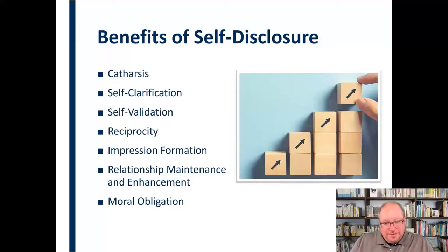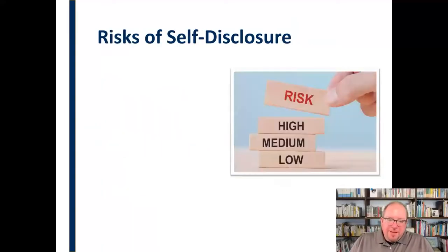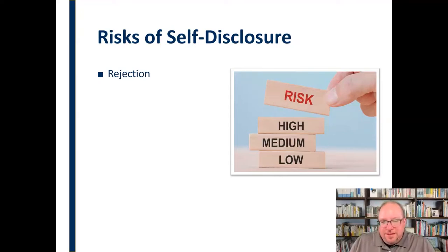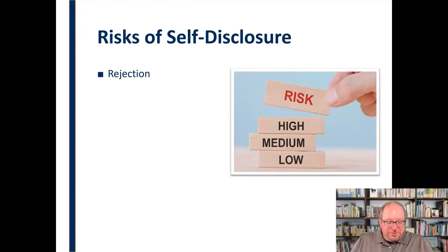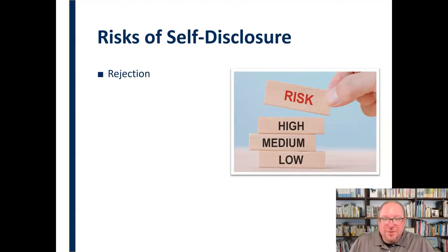Those are the positives — the reasons we get the thumbs up for self-disclosing. But there are also risks when we disclose to others. First is the risk of rejection. If I confess I'm a dog person and not a cat person, but you happen to be a cat person, you might reject me as a result. When you share something you care about, there's a risk the other person may reject you.